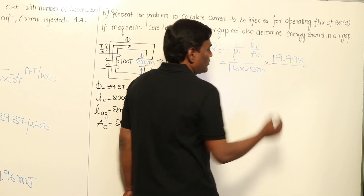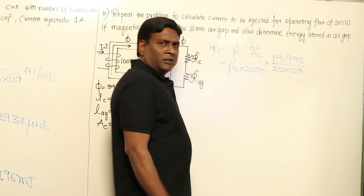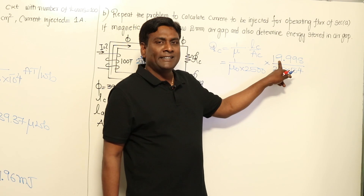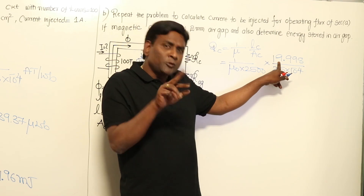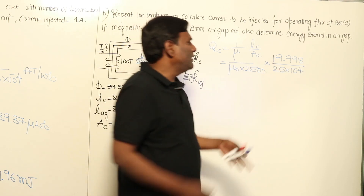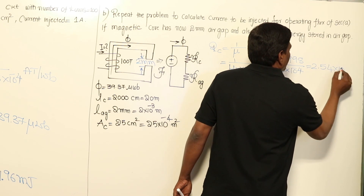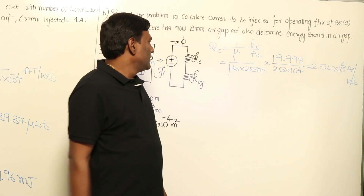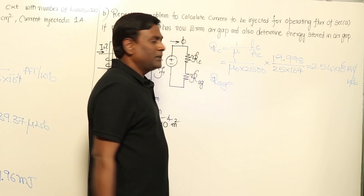Dividing by area 25 × 10⁻⁴ m², we see that the difference between 20 and 19.998 is negligible, so the core reluctance is still approximately 2.54 × 10⁶ ampere turns per weber — essentially the same as before.